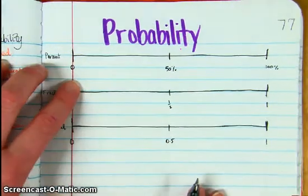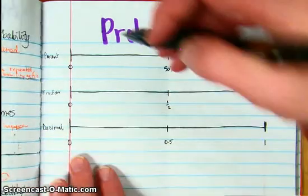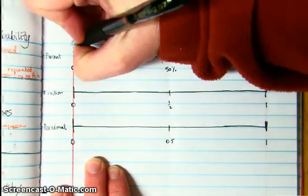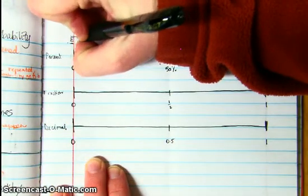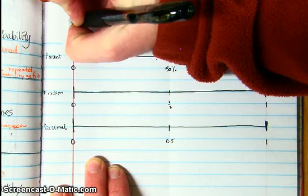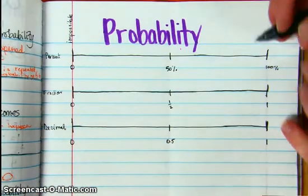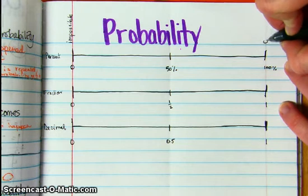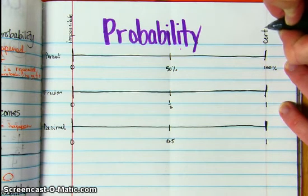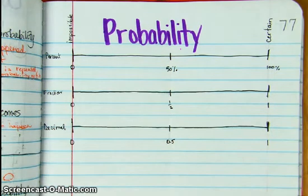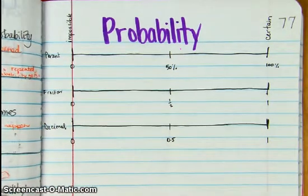So over here at zero, we're looking at impossible. Over here at 1, 1, and 100 percent, we're looking at certain, absolutely, positively, without a shadow of doubt, certain that that event is going to happen.